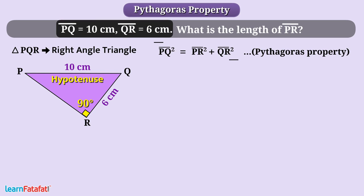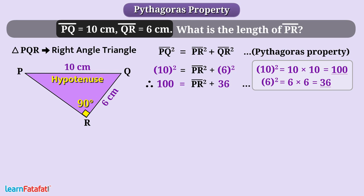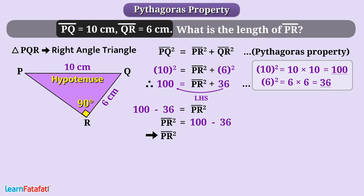Let's put the given values into this equation. 10 squared is equal to PR squared plus 6 squared. Here, 10 squared is 10 multiplied by 10, that is 100. Similarly, 6 squared is 6 multiplied by 6, which is 36. So 100 is equal to PR squared plus 36. Taking 36 to the left-hand side, we get 100 minus 36 is equal to PR squared. PR squared is equal to 64.